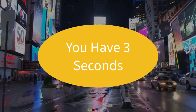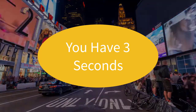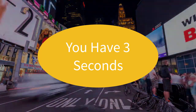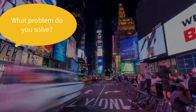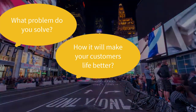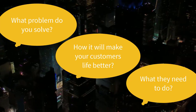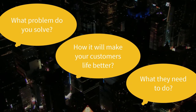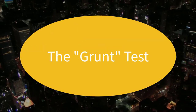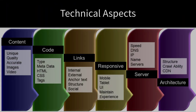You have three seconds. All of your digital marketing and planning starts with this basic psychology — you have three seconds to communicate what problem you solve, how it will make your customer's life better, and what they need to do to fill this solution. This is called the grunt test.